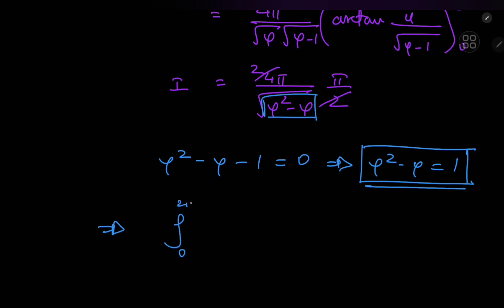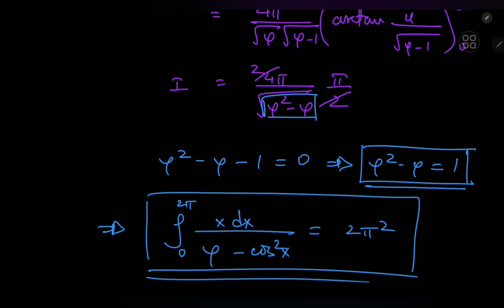Because it implies that our integral, that is the integral from 0 to 2π of x dx divided by φ minus the squared cosine of x equals 2π². A lovely integration result connecting two very important constants.